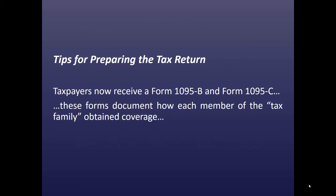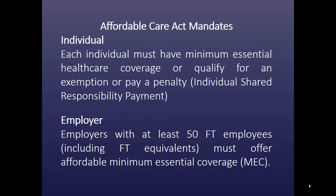Taxpayers will now receive a Form 1095-B and a Form 1095-C. These forms are fairly new and they document how each member of the tax family obtained their health coverage. Each individual must have Minimum Essential Healthcare Coverage or qualify for an exemption from the coverage or pay a penalty, which is known as the Individual Shared Responsibility Payment.